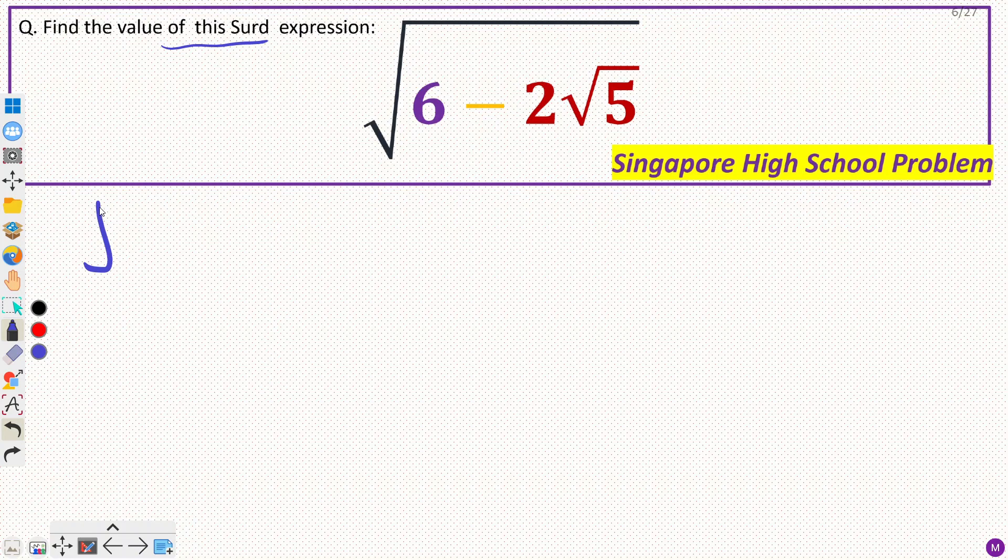So, we have square root of 6 minus 2 root 5. Now, since we have to get rid of this square root, then we will have to make this a perfect square.